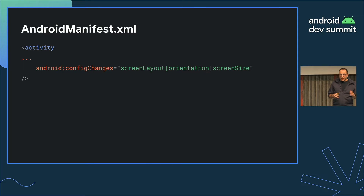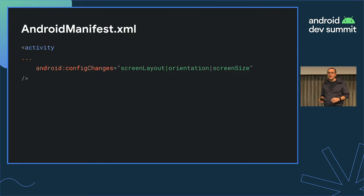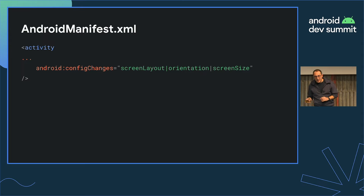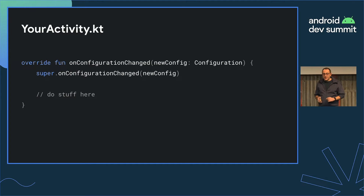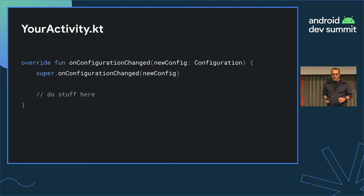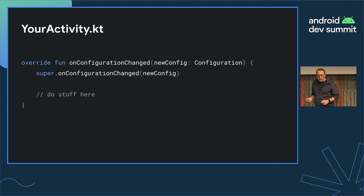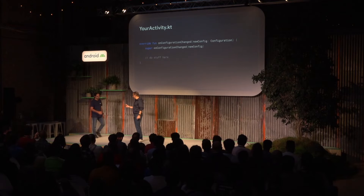Let's see how. In your Android manifest file, you need to add the configChanges line in your activity tag, listing all the configurations that you want to manage. Then, in your activity, you override the onConfigurationChanged method and run your layout calculation and invalidation in there. And now I'd like to invite Ron to tell us something more about activity embedding.